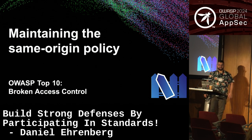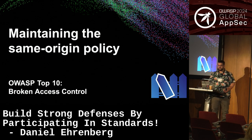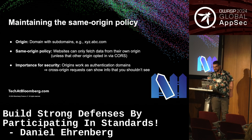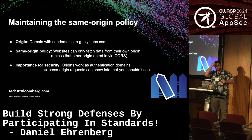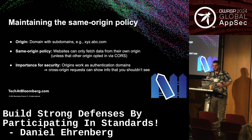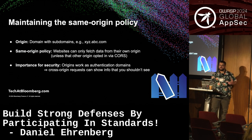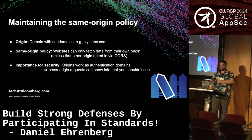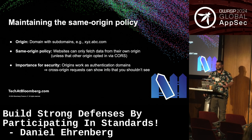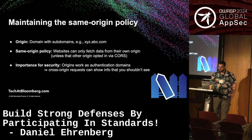A next thing developed in TC39 is work to maintain the same-origin policy. This is related to the OWASP Top 10 of broken access control, a frequent source of errors. Origins are the top level of a website with all the subdomains but not the path after that. The same-origin policy says that websites can only look at data that comes from their origin, unless that other origin opts in via CORS. This is important for security because origins have their own authentication mechanisms, and a particular fetch from a browser to an origin may deliver data back to the client that it doesn't have the right to see.